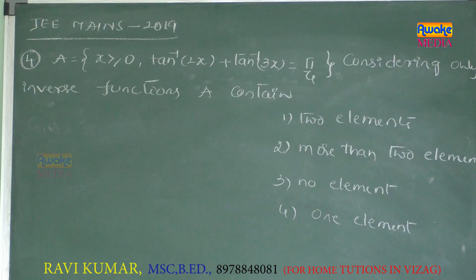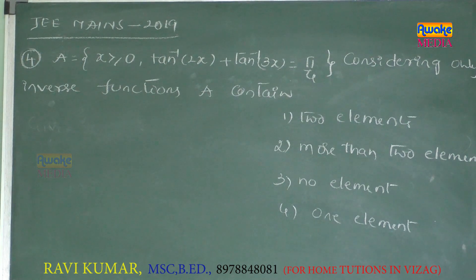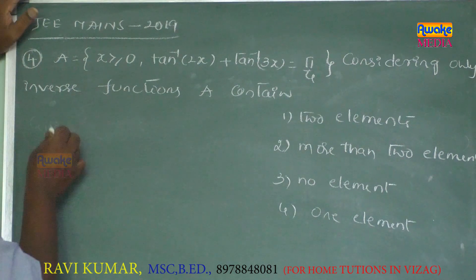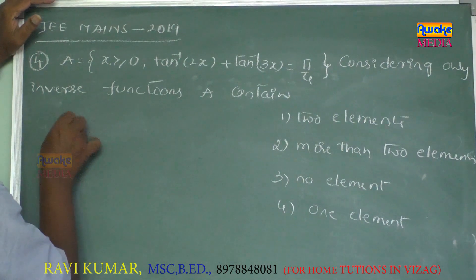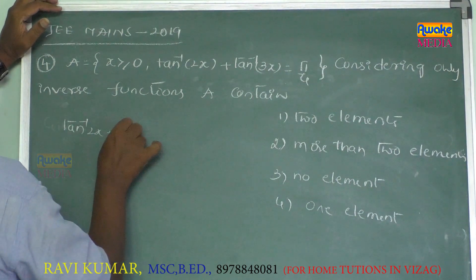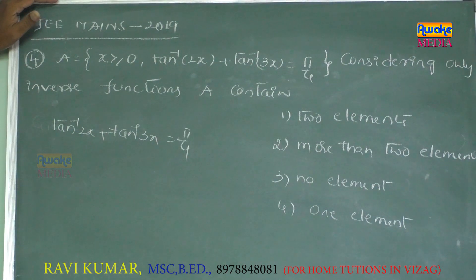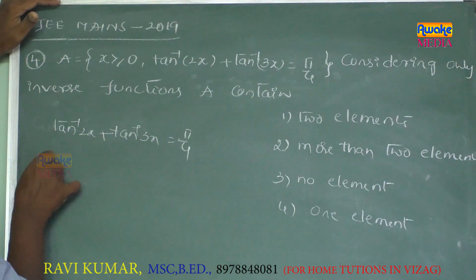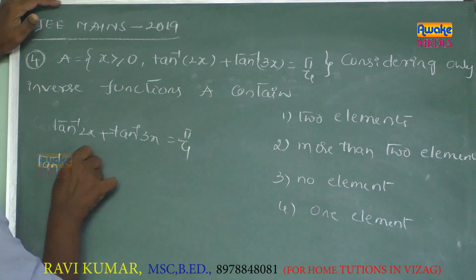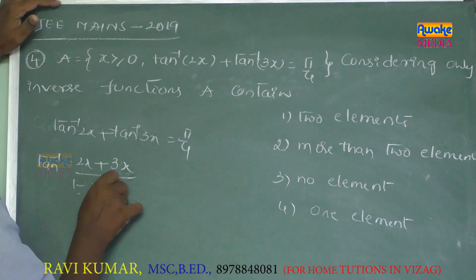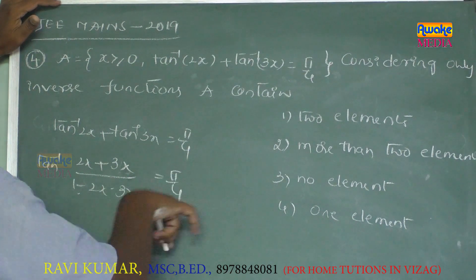Let A be the set of x ≥ 0 satisfying tan⁻¹(2x) + tan⁻¹(3x) = π/4, considering only inverse functions. Write tan⁻¹(2x) + tan⁻¹(3x) using the formula tan⁻¹x + tan⁻¹y = tan⁻¹((x + y)/(1 - xy)) equals π/4.